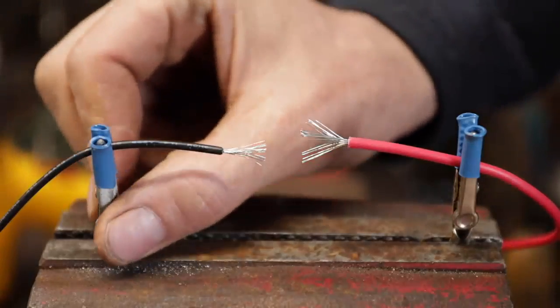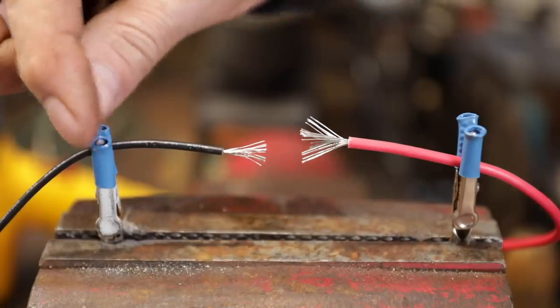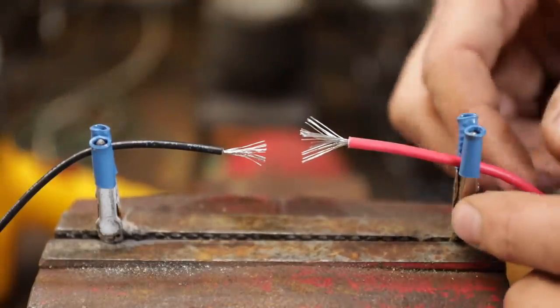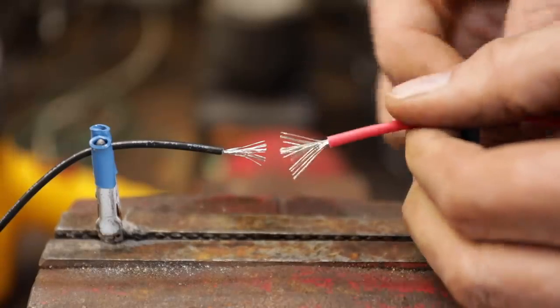Some of these alligator clips have a pretty tight spring on them, so take some shrink tubing on the ones you're going to keep in your kit and just melt it on there. That way they won't mess up your wire. This is going to hold things securely and you're going to get a whole lot better job.